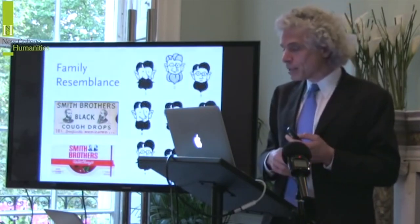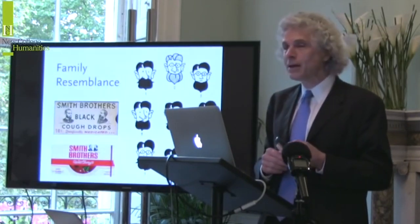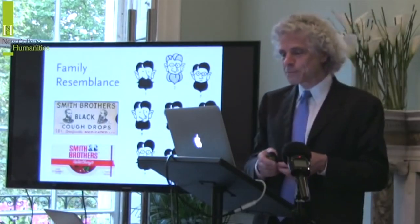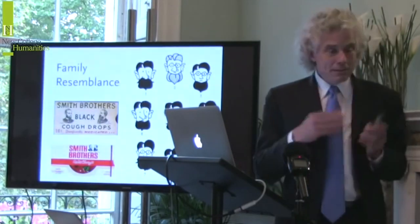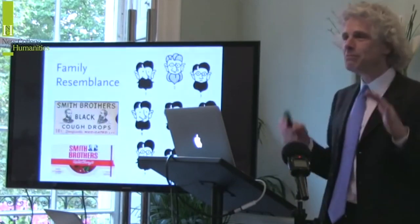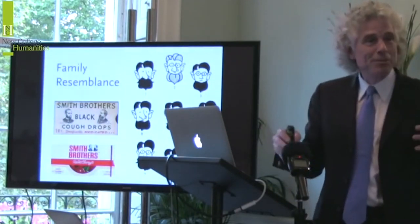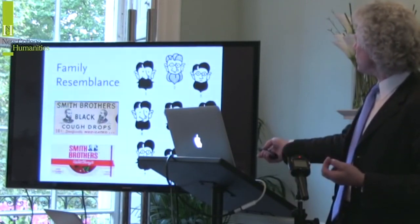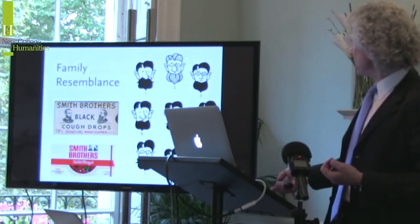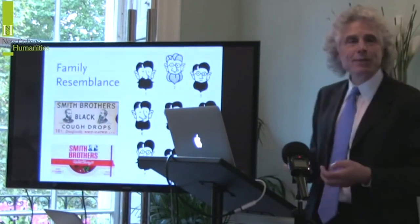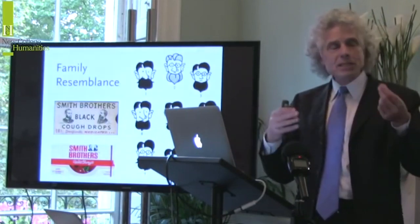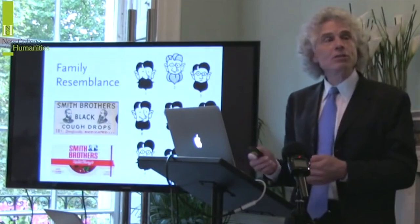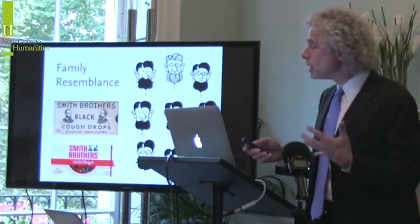This pattern of overlapping traits is sometimes called family resemblance because it reflects the way members of a family are similar to one another. I'll illustrate with the Smith Brothers of cough drop fame — a product that goes back about 120 years. Here we have a hypothetical family portrait: one gentleman has light hair, a beard, and spectacles; another has a beard and dark hair but no spectacles; another has no spectacles but light hair and a light beard. Just like members of your own family, you might share a nose with your sister and a smile with your brother. It isn't that every member has the same trait — this is the logical structure Wittgenstein argued is true of human categories.